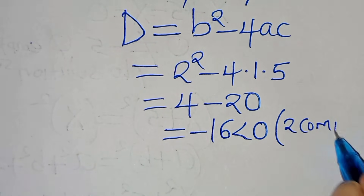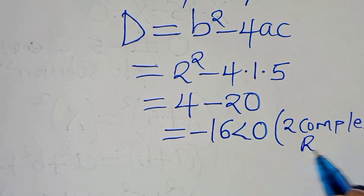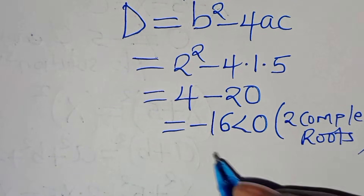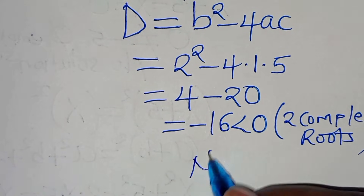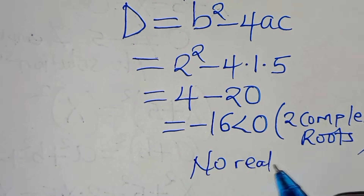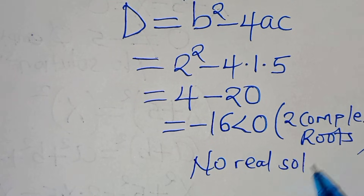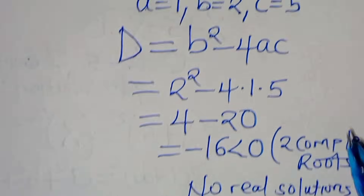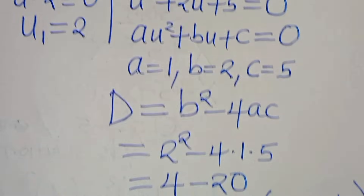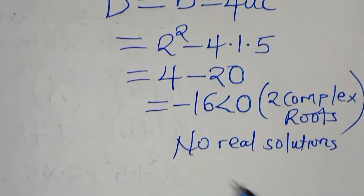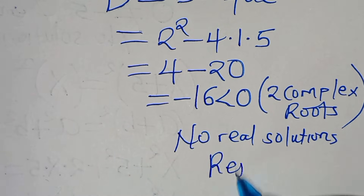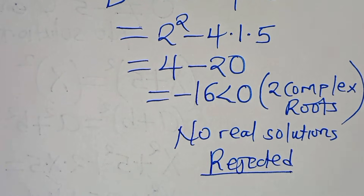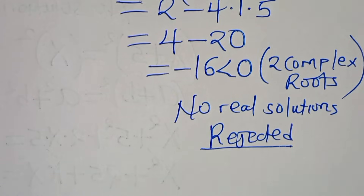Since the discriminant is minus 16, which is less than 0, we have two complex roots — there is no real solution from this quadratic equation. Therefore, the quadratic equation is rejected.